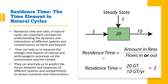To calculate residence time, we divide the amount of element in the reservoir — for example, 20 gigatons — by the flows in or out from the system, which is 10 gigatons per year. The residence time is therefore two years. This is how we can calculate the residence time of any element.